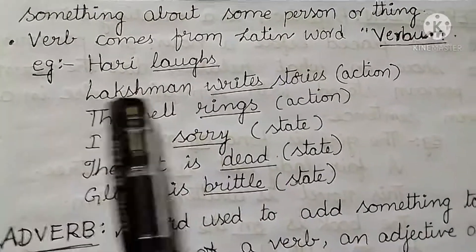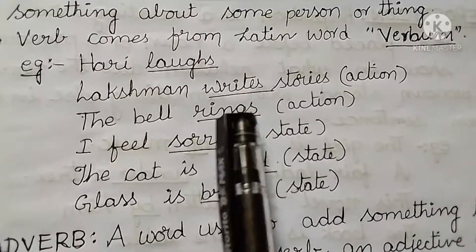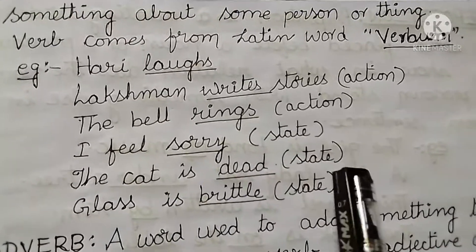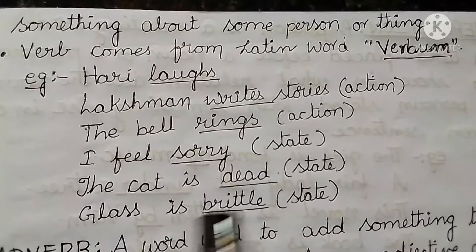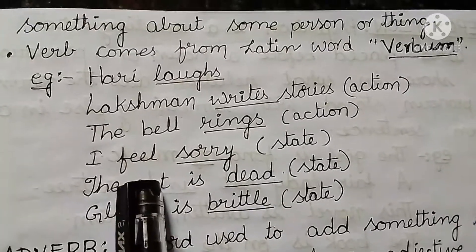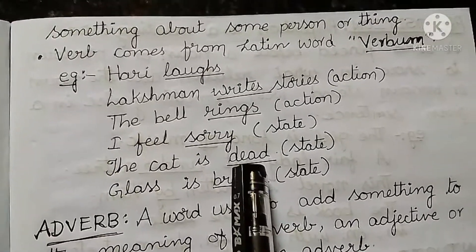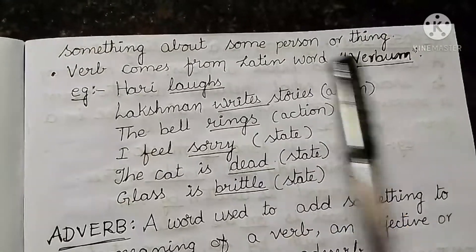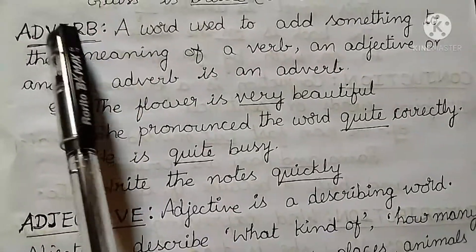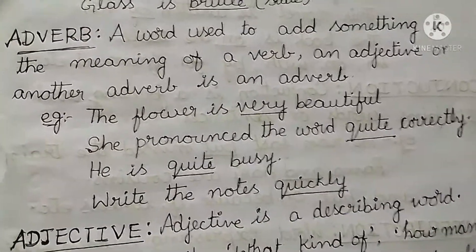For example, 'her ring laughs' — laughs is an action. 'Lakshmi writes stories' — writing is also an action. 'The verb rings' — rings is an action. 'I feel sorry' — it is a state. 'The cat is dead' — it also represents a state. 'Glass is brittle' — brittleness shows the state of the glass. So the verb is a word which expresses an action, state, or being — called an action word.